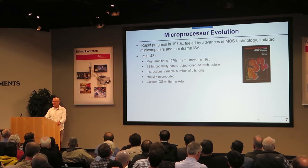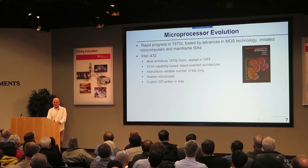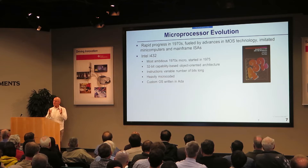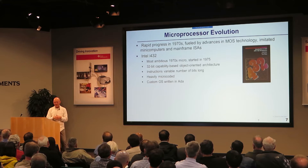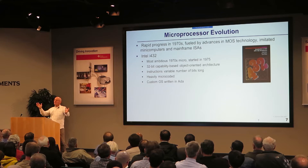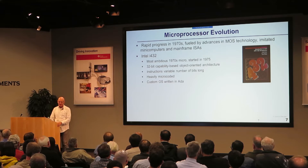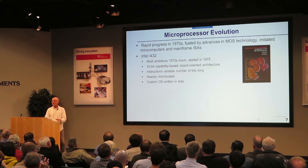It was by far the most ambitious project: the iAPX 432. It was a 32-bit address space at a time when even the 8080 wasn't a 16-bit address space. It was capability-based, meaning security was built into the address space. The instructions could be any number of bits — they could have 3-bit instructions, 17-bit instructions, no restrictions. It had really big microprograms to get all that complexity in. They even wrote their own operating system in an esoteric language.